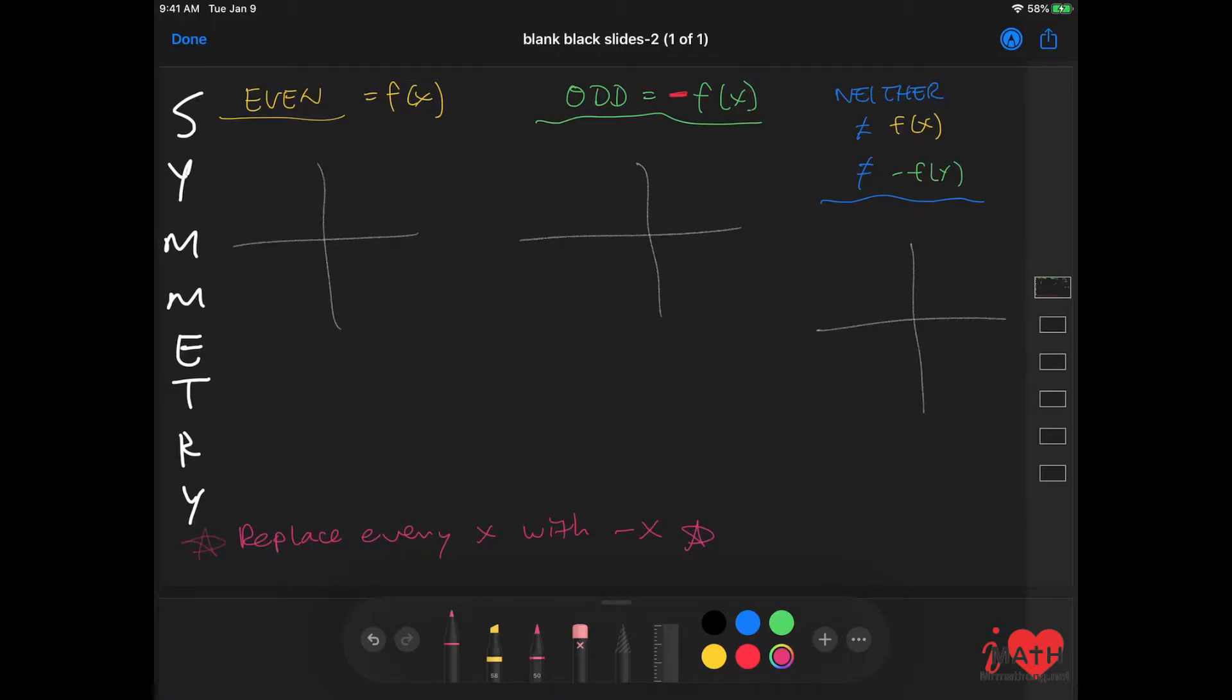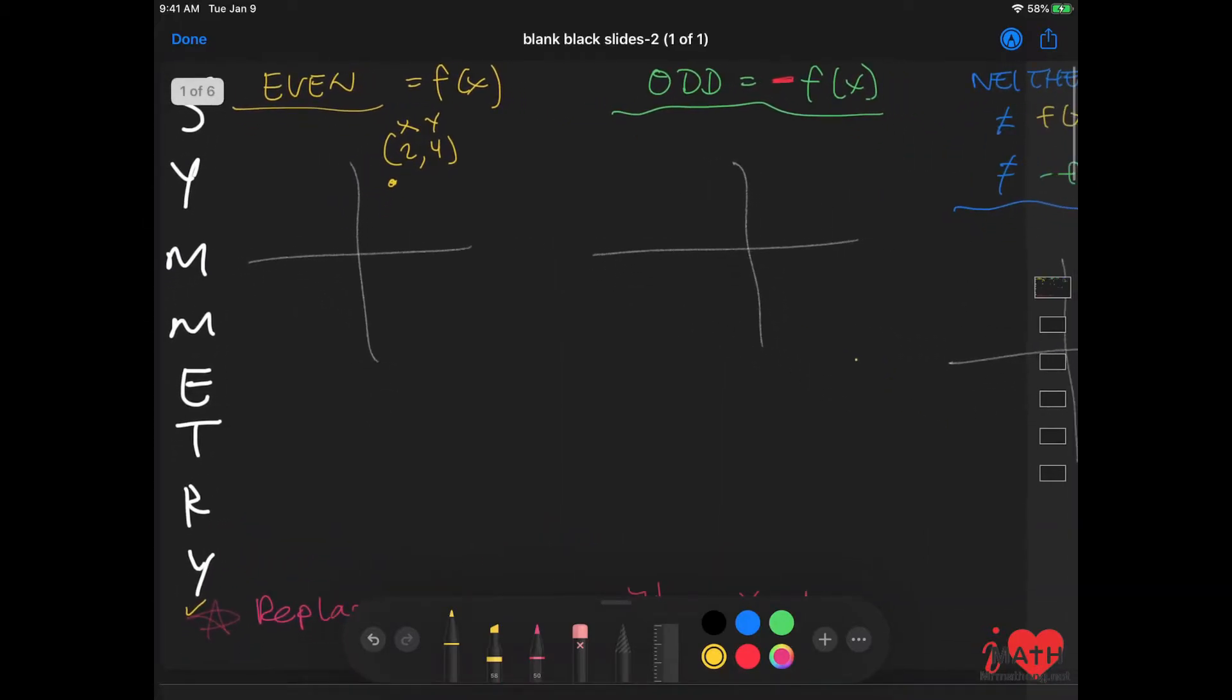Let's do an example of even. Let's say my ordered pair here is (2, 4). This is my x and this is my y. To test it, you're going to replace every x with negative x. So if I take this value and make it the opposite of what I have, you get negative 2.